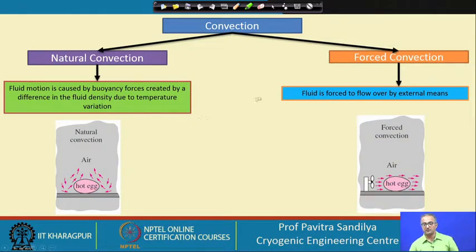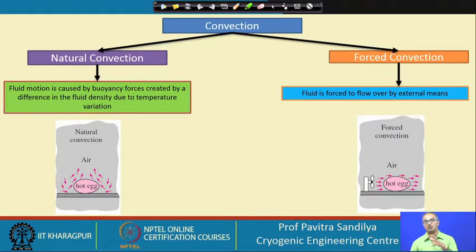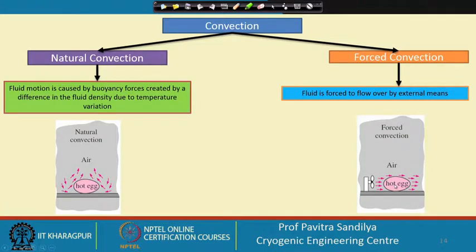In forced convection, the medium is forced to move — shown here by a fan. Whenever we have a hot object and we switch on the fan, we are trying to give convective heat transfer over the hot surface. This forced convection causes the hot material to cool down faster than under natural convection.